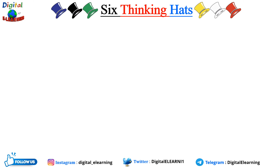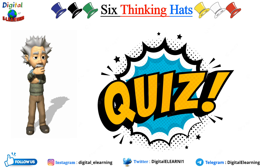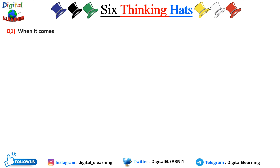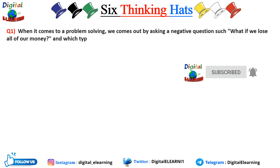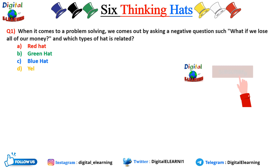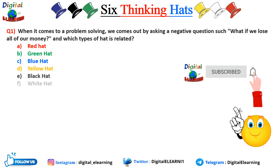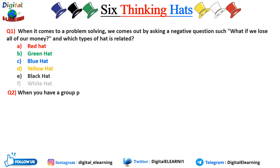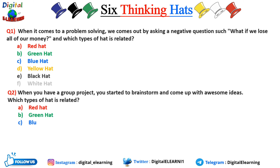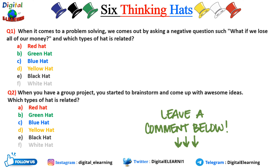Here is a small quiz to see how much you have understood. Question 1: When problem solving, we come across a negative question such as 'What if we lose all our money?' — which type of hat does this relate to: red, green, blue, yellow, black, or white? Question 2: When you have a group project and you start to brainstorm and come up with awesome ideas, which type of hat are you wearing? You can leave your answers in the comment section below, and the correct answers will be provided afterwards.